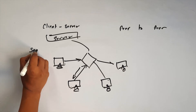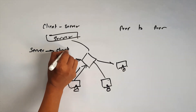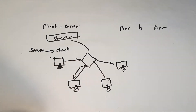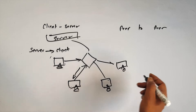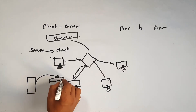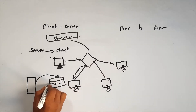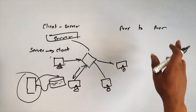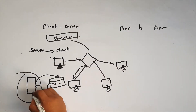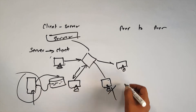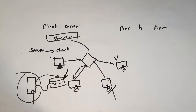In client-server architecture, all the computers in a network are connected to the centralized computer, which is known as the server, and all services come from it. For example, when we go on Facebook on mobile, our request goes through the internet to the Facebook server. My information is available on the Facebook server, so I access it from my computer as a client.